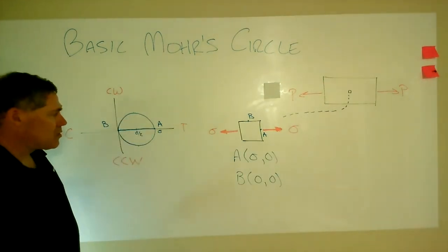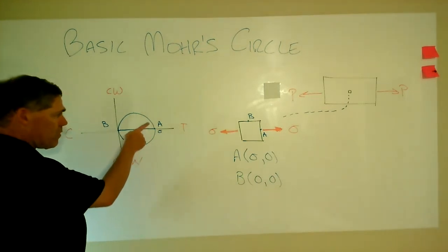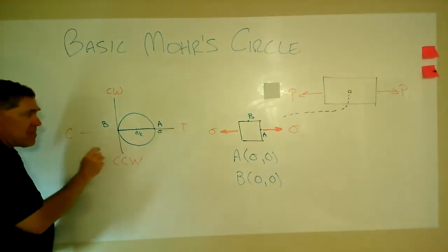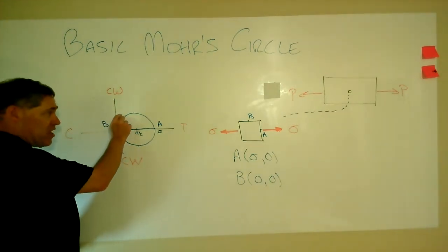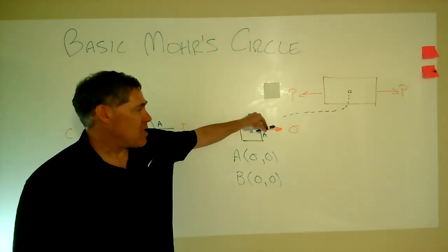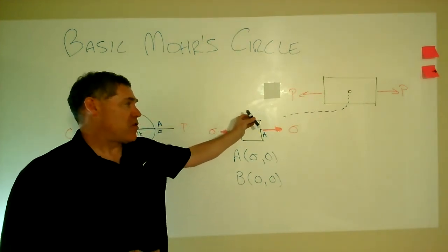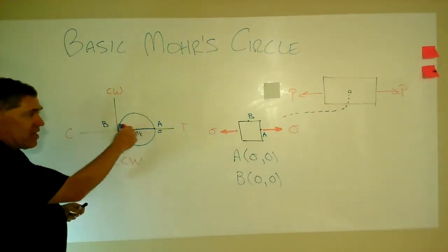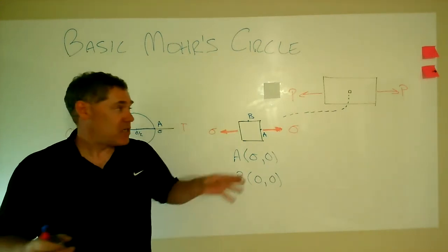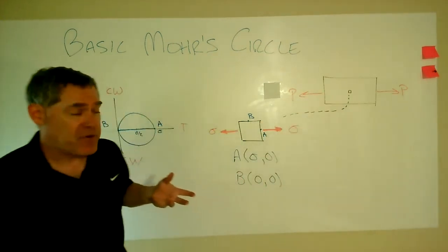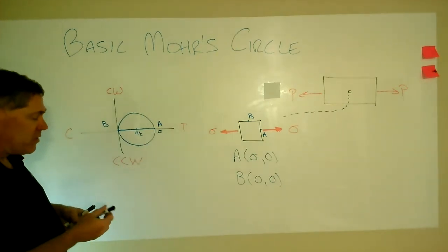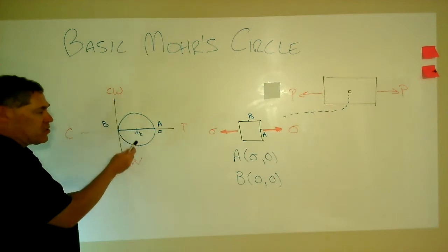So there's your circle. Now there's a whole lot of interesting things going on here. One, note that in this case, the circle is entirely on the right half of the diagram. That means, because remember, the circle plots every single possible combination of normal stress and shear stress on any oriented plane all the way throughout the system. So since the circle is entirely over on the tension side, that means nowhere in this particular system here do you see any compressive stresses.